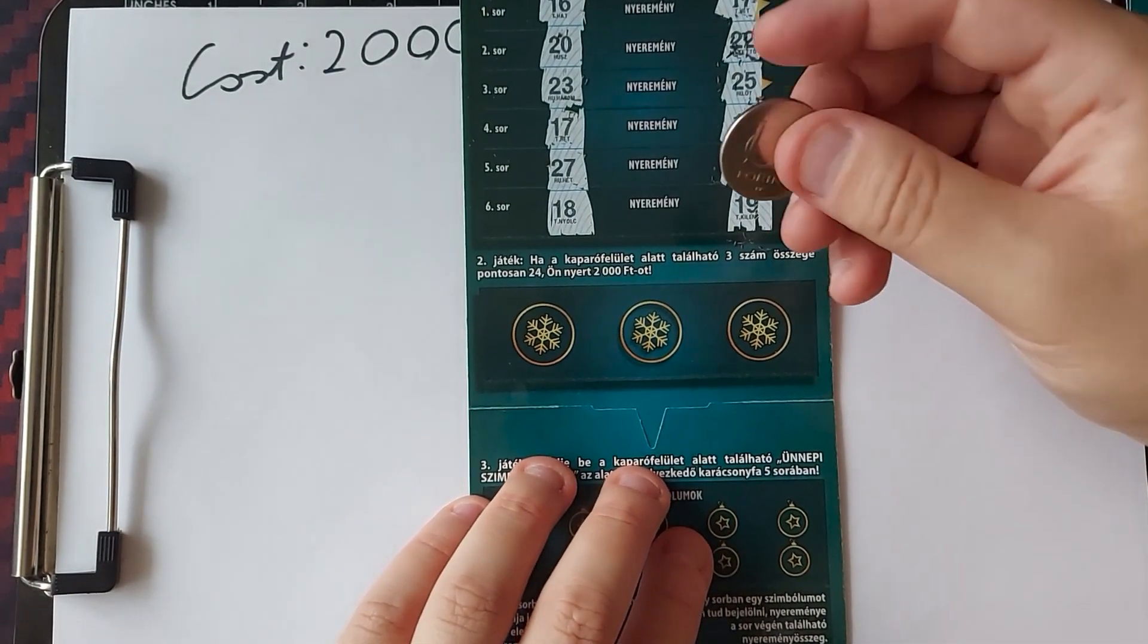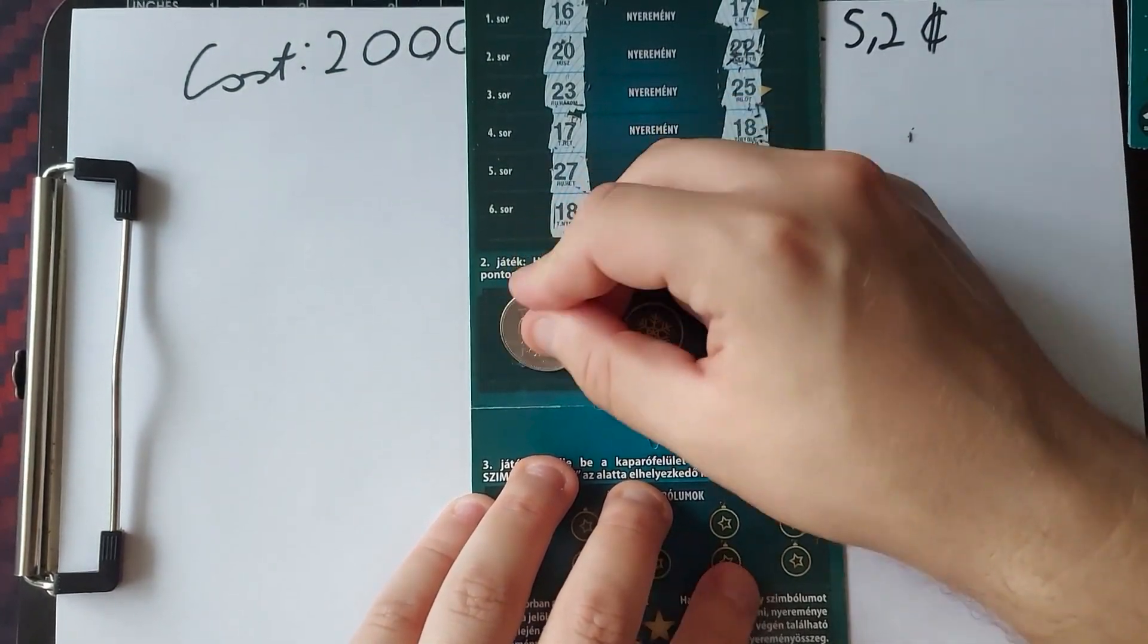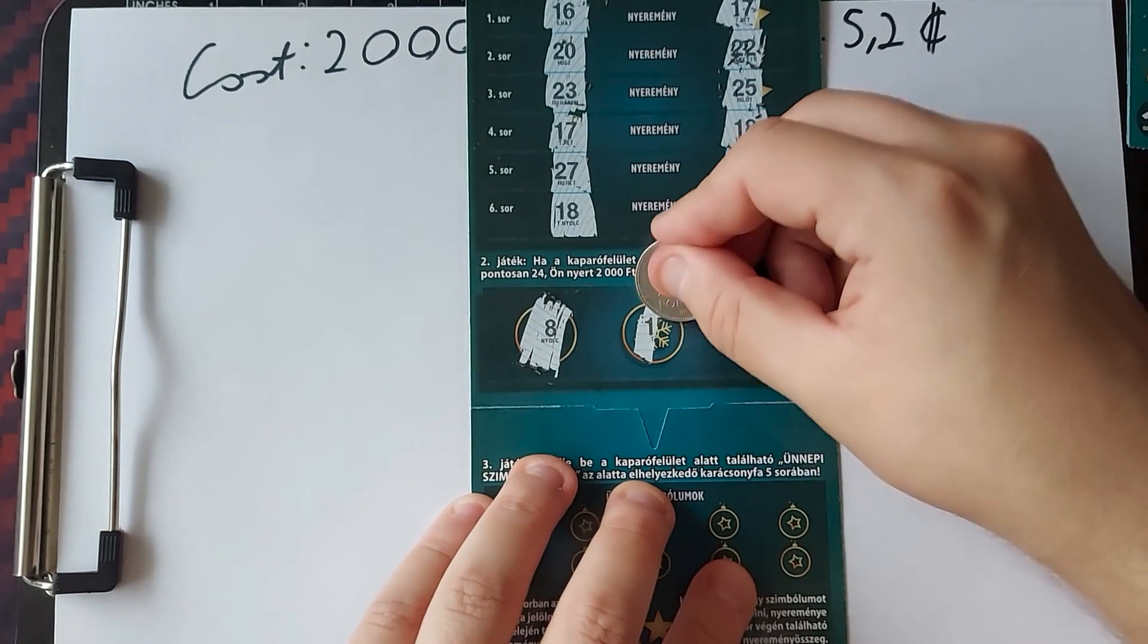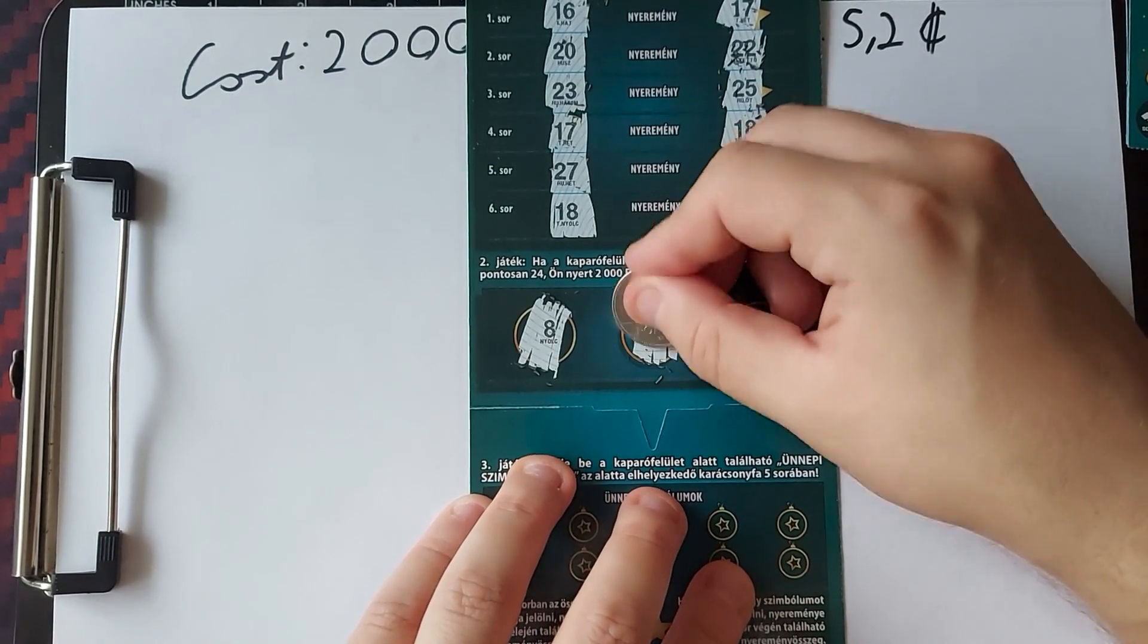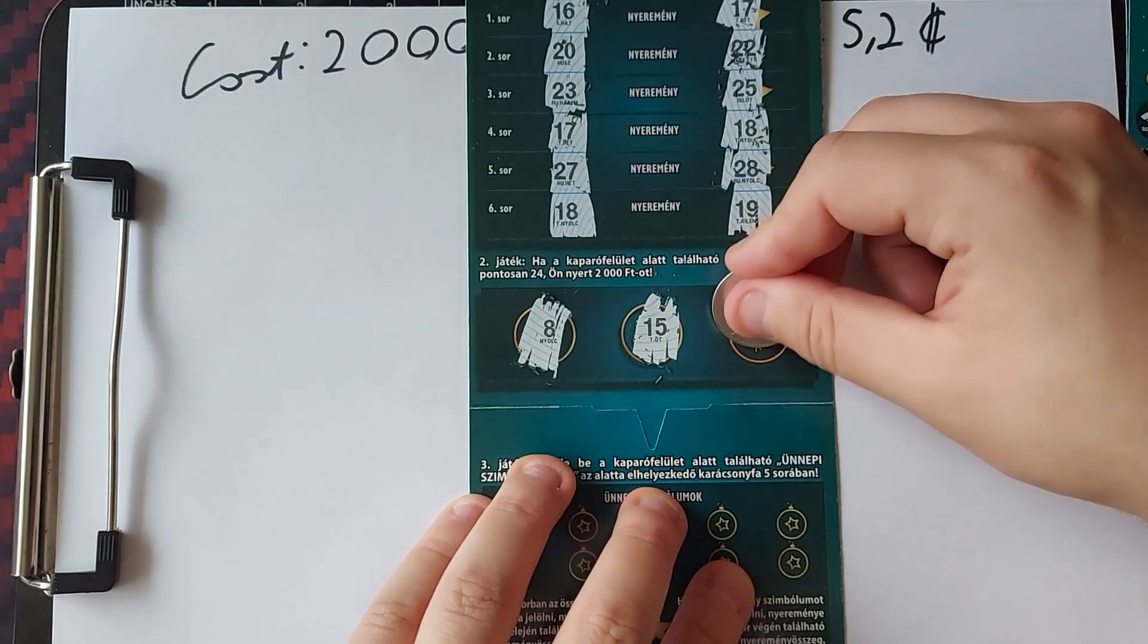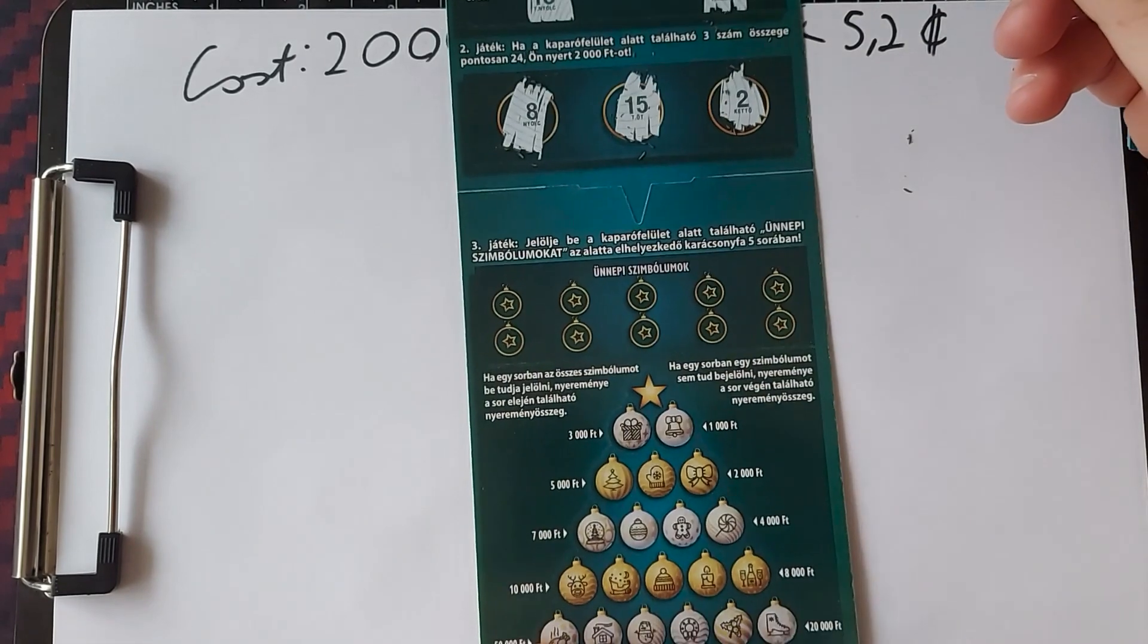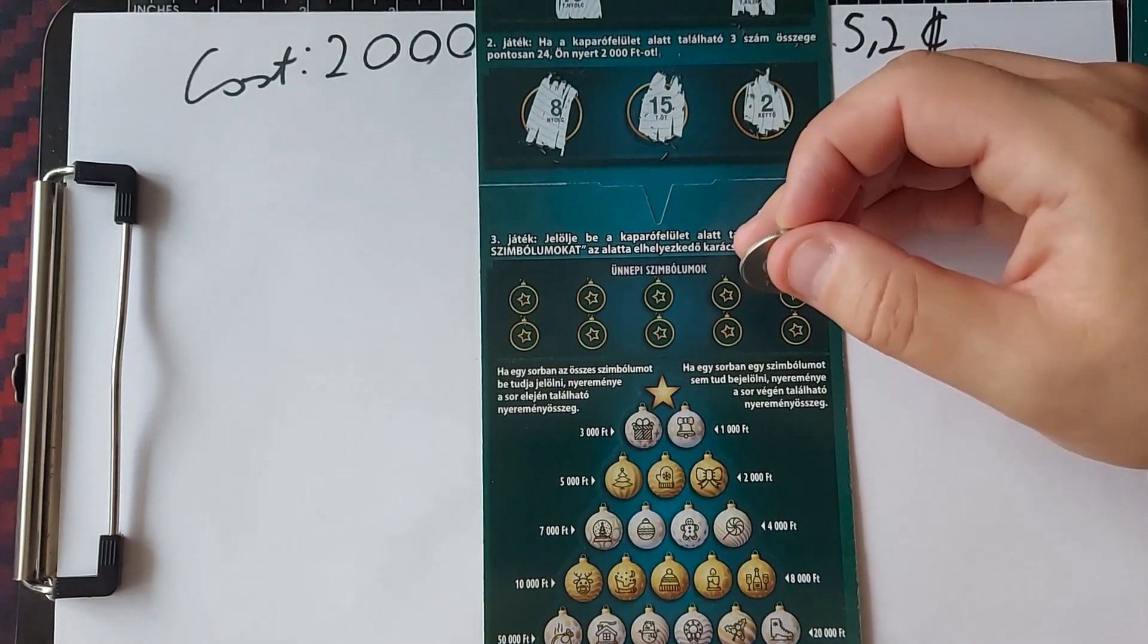The second game, if we got the values of the 3 numbers, 24, so 8 and 15, that's 23, so we have to scratch 1 and it's a 2, so no win.